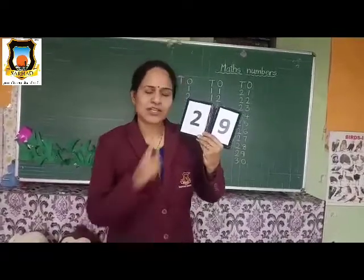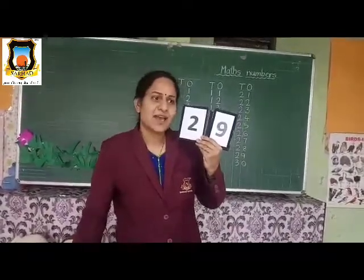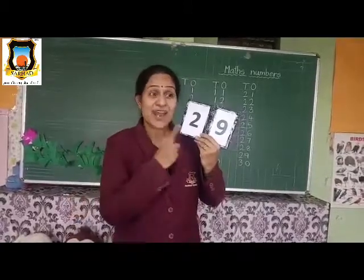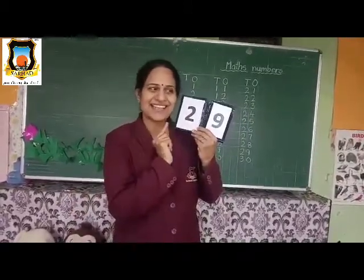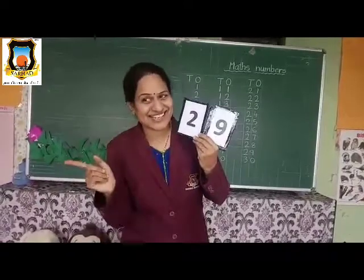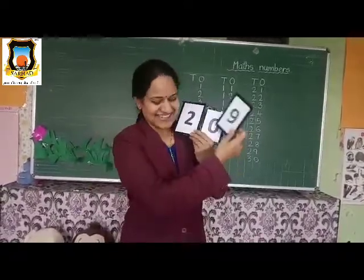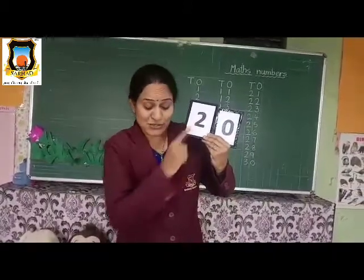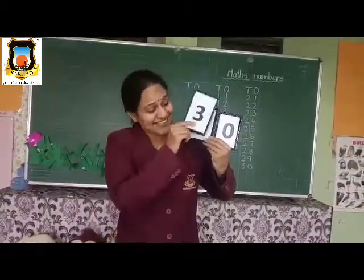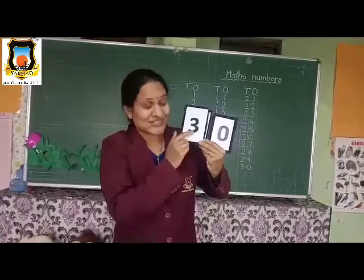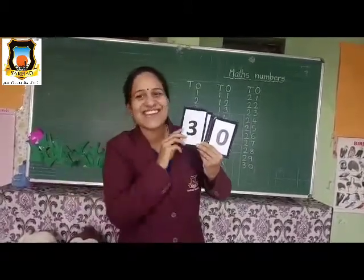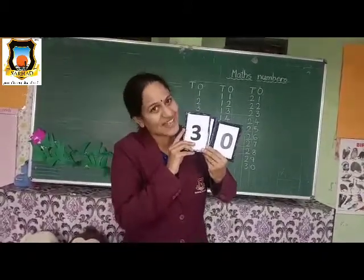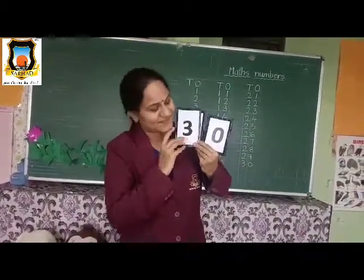Now all of you tell me what comes after 29. Maine abhi aapko bataya tha — 19 ki baad kya ata hai? 2, 0 — 20. Same way, abhi yahaan pe 2 ki jagah pe 3 aa jaata hai. Teacher: 3, 0. So 3, 0 — 30. Say everyone: 20 and 10, 30. 20 and 10, 30. Very good.